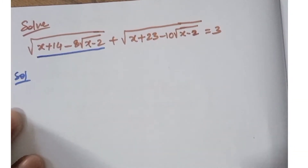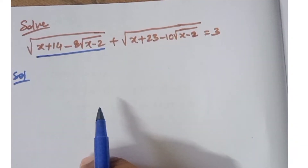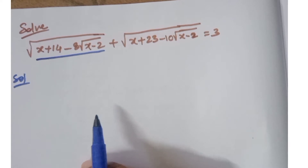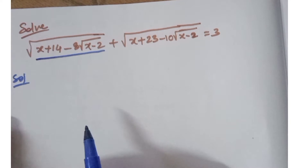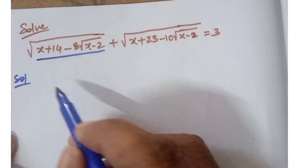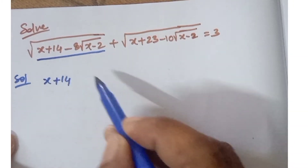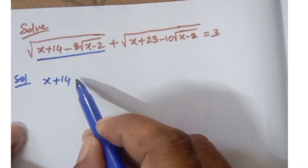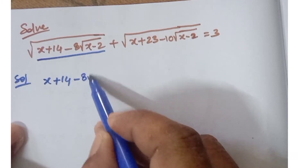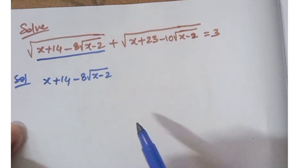I'm giving 10 seconds — think about this question. This is a non-routine question. Now let's go to the solution. So x plus 14, that is x plus 14 minus 8 root of x minus 2.